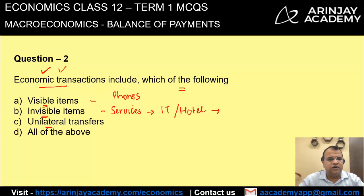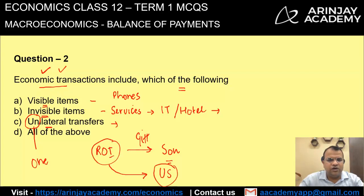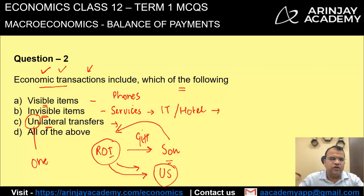Unilateral transfers are also covered. The word 'uni' means one or single. These are transactions where, for example, a resident of India gifts some money to his son living in the US. This is a transaction between two different countries — a resident of India and the rest of the world. It's a unilateral transfer because it's a one-way flow of money; the son gives nothing back in economic terms. Even these are covered within the definition of economic transactions. Therefore, the correct answer is D.